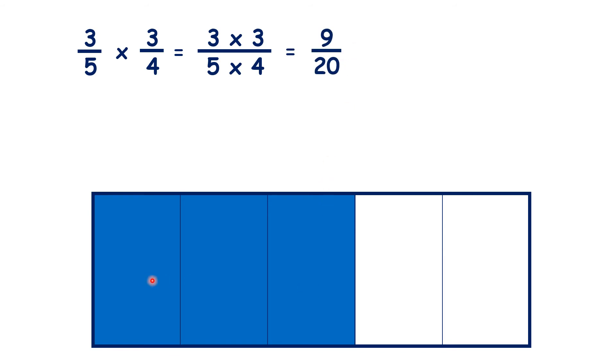So on our fraction bar, we can start with three-fifths, and if we're multiplying by three-quarters, what we're really doing is finding three-quarters of the three-fifths we have.